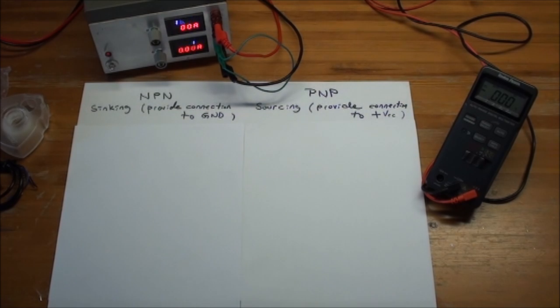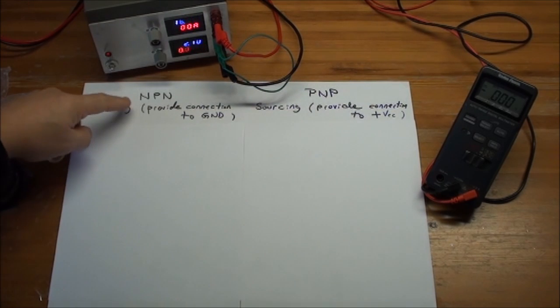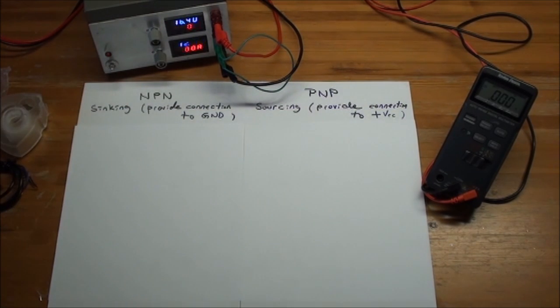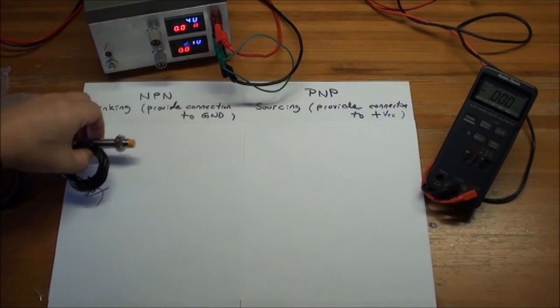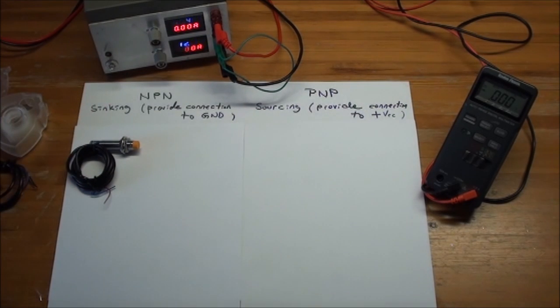In a previous video, I made an experiment with an induction proximity switch, and what I used for that was an NPN normally open. That was actually this one. But a friend of mine made me aware that there's actually quite a few other versions.